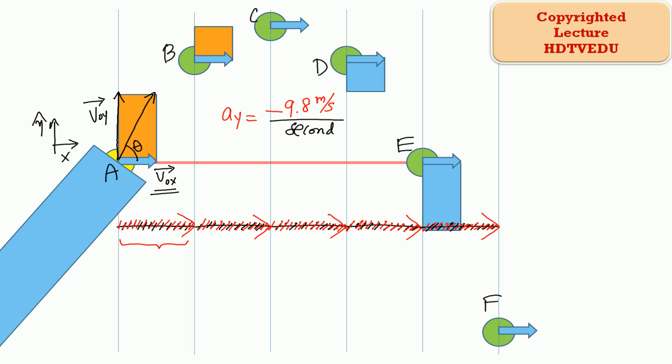At point B, the y component of the velocity vector points vertically up, but the acceleration due to gravity points vertically down. At point C, which is at the maximum height, the y component of the velocity vector is equal to 0.